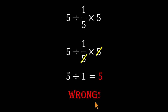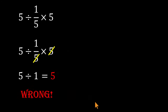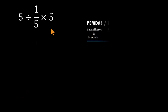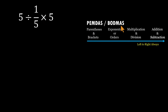Here's why that shortcut breaks the rules. This expression has division and multiplication sitting side by side. And under PEMDAS or BODMAS, division and multiplication have equal priority. When that happens, there's only one rule that matters: go strictly left to right.